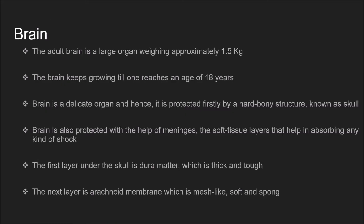Now we will look at what exactly is inside the brain. The adult brain is a large organ weighing approximately 1.5 kg. It is very soft and jelly-like. The brain keeps growing until one reaches an age of 18 years, hence it is very important to have proper nutrition. The brain is a delicate organ and is protected firstly by a hard bony structure known as the skull. The brain is enclosed in the skull, which not only protects it but also retains its shape.